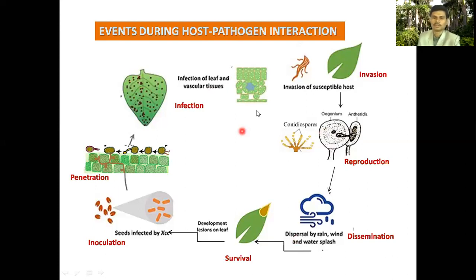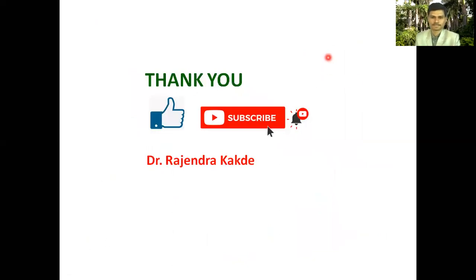All of this happens due to the disease triangle — all requirements must be met: the pathogen must be a virulent one, the host must be susceptible, and environmental factors must be favorable. Only then will disease develop. Thank you for your attendance and kind cooperation. If you have not subscribed to my channel, please subscribe, do like, and do not forget to press the bell icon. Thank you very much.